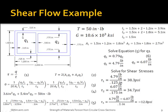Now that the shear flow is known, you can derive the shear stress on each wall. Since there are three different wall thicknesses and the way the shear flow interacts on the middle section, there will be three separate maximum stresses. Shear stress 1, representing the first thickness, equals 38.3 psi. Shear stress 2, representing the second thickness, equals 34.7 psi. And shear stress 3, representing the third thickness, equals negative 12.8 psi. Notice that in solving shear stress 3, you have to subtract the two shear flows solved previously against each other.